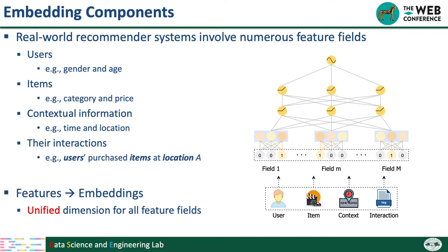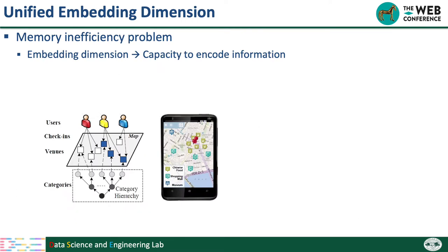There are two reasons for this inefficiency. First, an embedding dimension decides its ability to capture information. If we simply assign the same dimension to all feature fields, we may lose the information of important features but waste memory on unimportant ones. For example, the location feature is very important in location-based recommended systems, so we should assign it a large dimension.